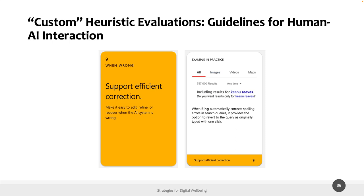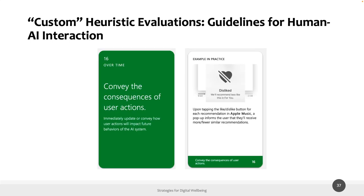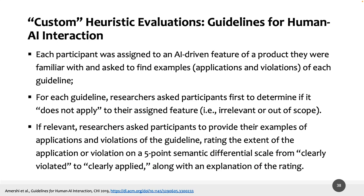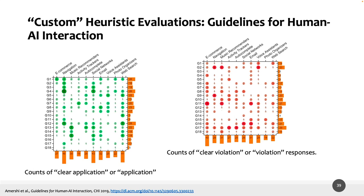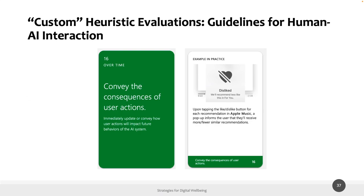Another guideline: 'support efficient correction — make it easy to edit, refine, or recover when the AI system is wrong.' Also: 'convey the consequences of user actions — immediately update or convey how user actions will impact future behaviors of the AI system.' To evaluate these guidelines, they conducted a heuristic evaluation: each participant was assigned a feature exploiting AI of a particular product and asked to find examples of violations of each guideline. This is another example of heuristic evaluation applied in another context.